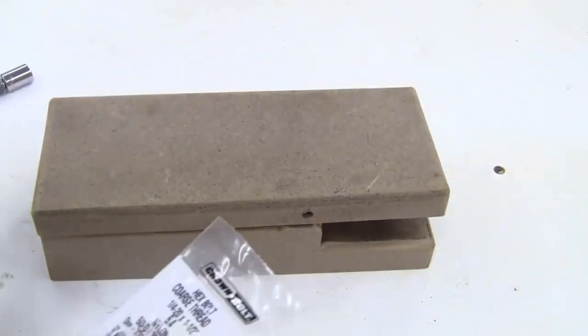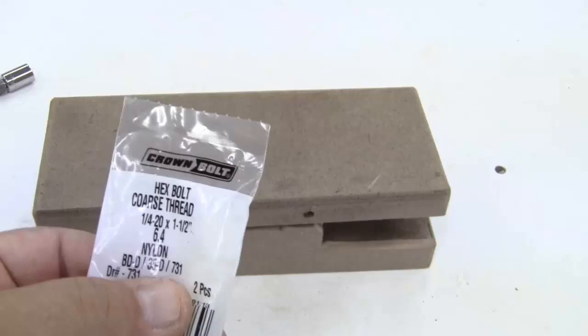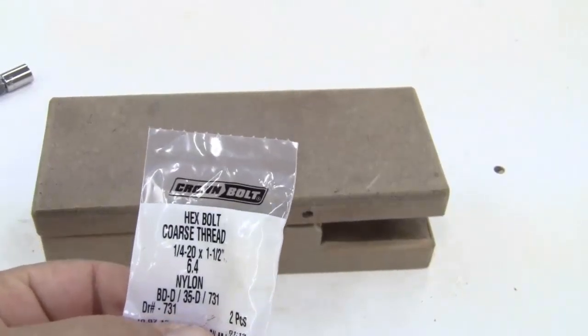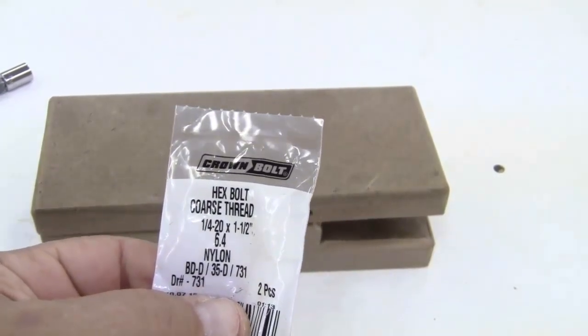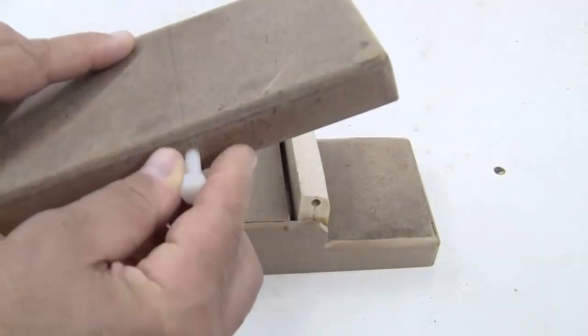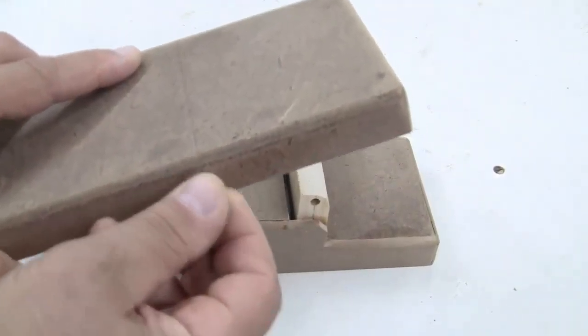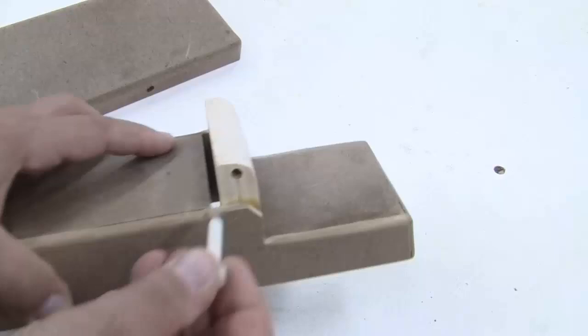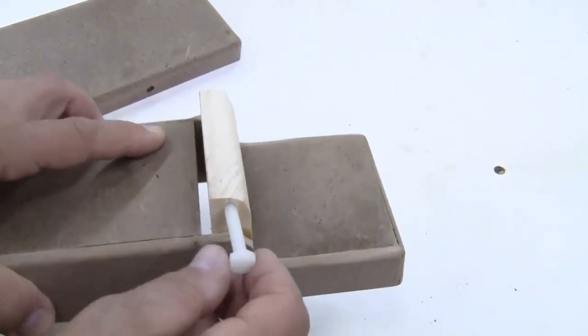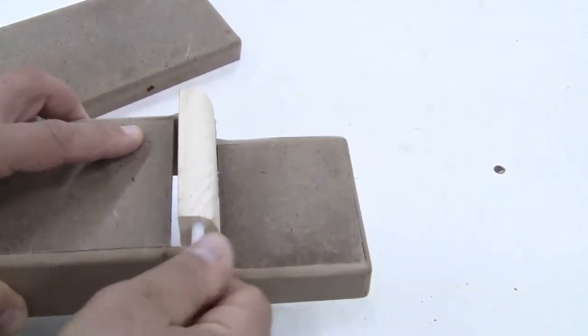What I'm going to do now is use these hex head coarse thread nylon bolts. They're a quarter twenty and they're an inch and a half long. And if you notice, since I drilled this a little larger than a quarter inch, it goes through fine. Since I drilled this a little smaller than a quarter inch, it's going to thread right in.